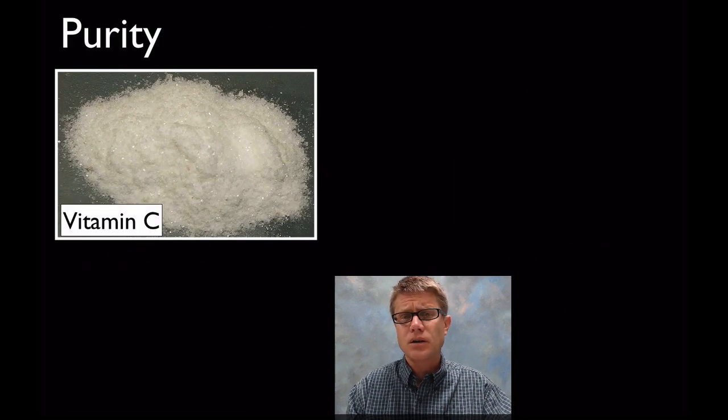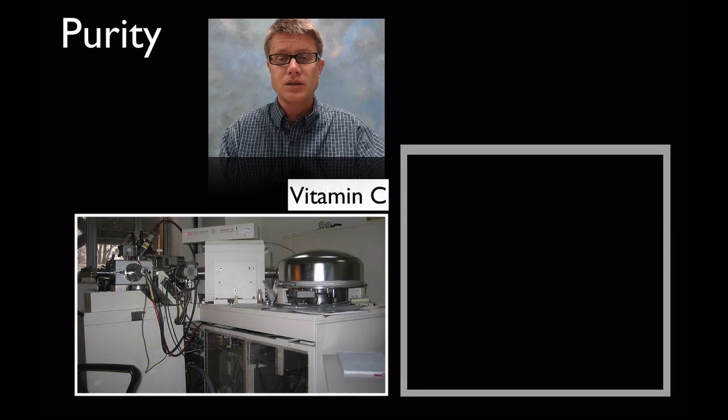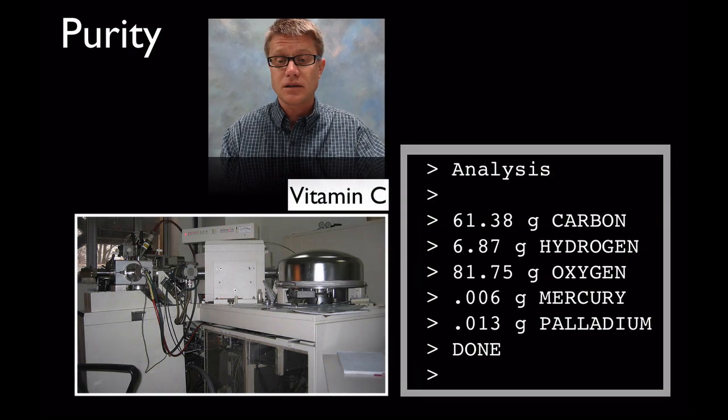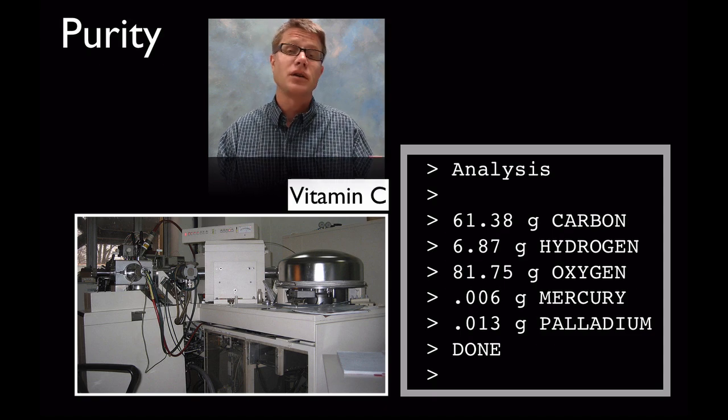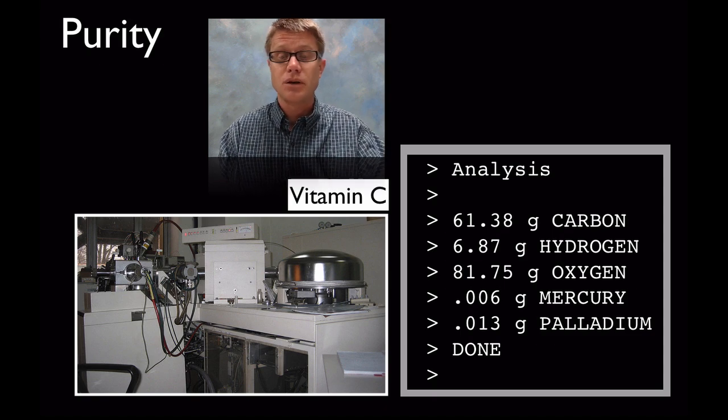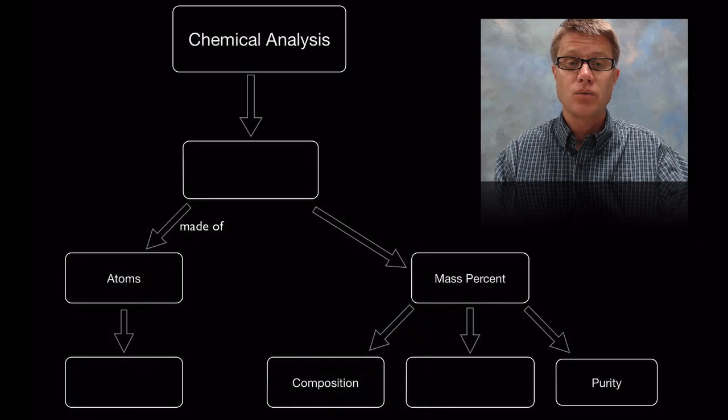We could also use a mass spec to figure out the purity. So if we were to throw that vitamin C in there and we get kind of evidence like this, well that tells us there's a lot of carbon, hydrogen and oxygen. But we also have some impurities in there. We have some mercury and palladium which is something that you don't want in your vitamins as well.